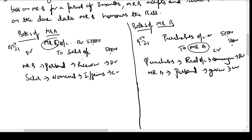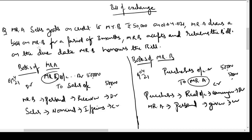Now suppose Mr B requests Mr A to give him three months' time to make the payment. The question arises: why should Mr A allow Mr B three months' time? Because Mr B has requested, Mr A draws a bill of exchange on Mr B for a period of three months.